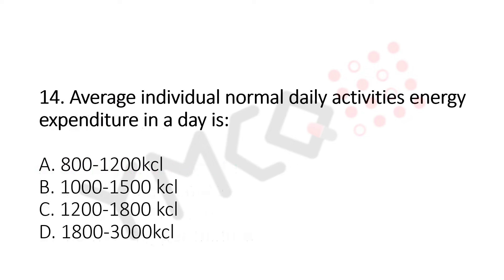Let's move to question number 14. Average individual normal daily activities energy expenditure in a day is: Option A, 800 to 1,200 kilocalories. Option B, 1,000 to 1,500 kilocalories. Option C, 1,200 to 1,800 kilocalories. Option D, 1,800 to 3,000 kilocalories. And the answer is Option D, 1,800 to 3,000 kilocalories.